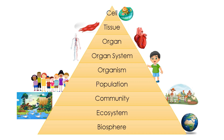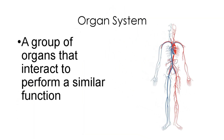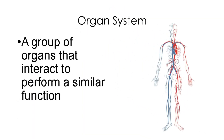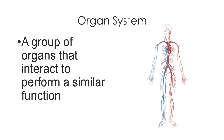Organ systems is a group of organs that interact to perform a similar function, like for example our circulatory system, which includes our heart, blood vessels, and blood.